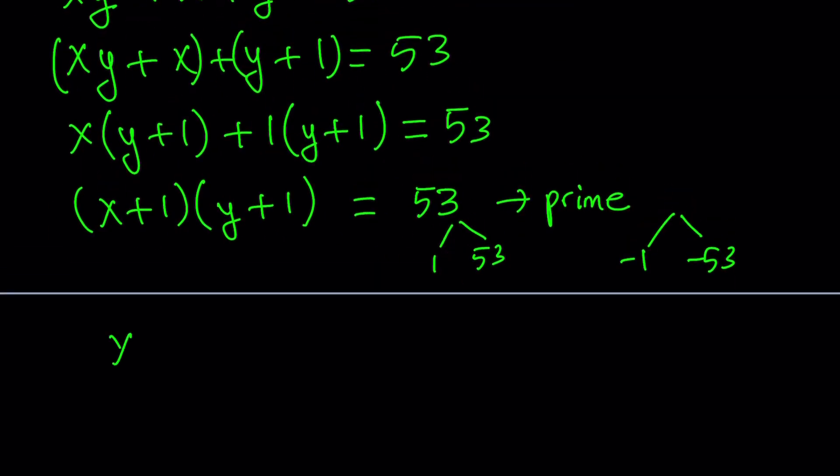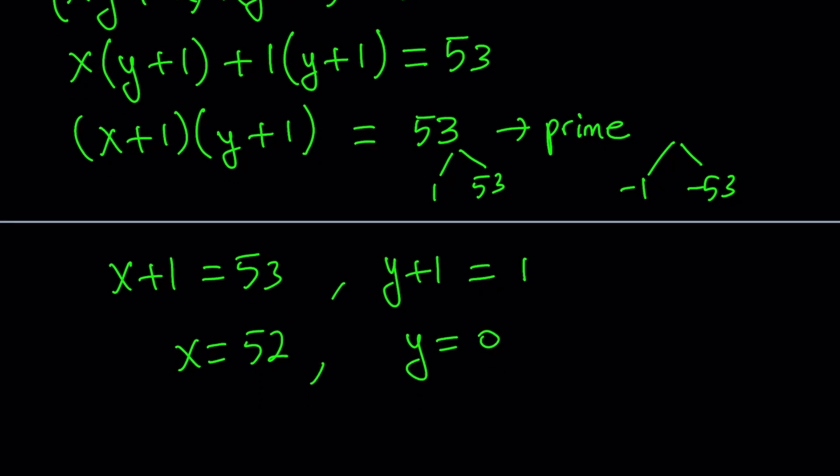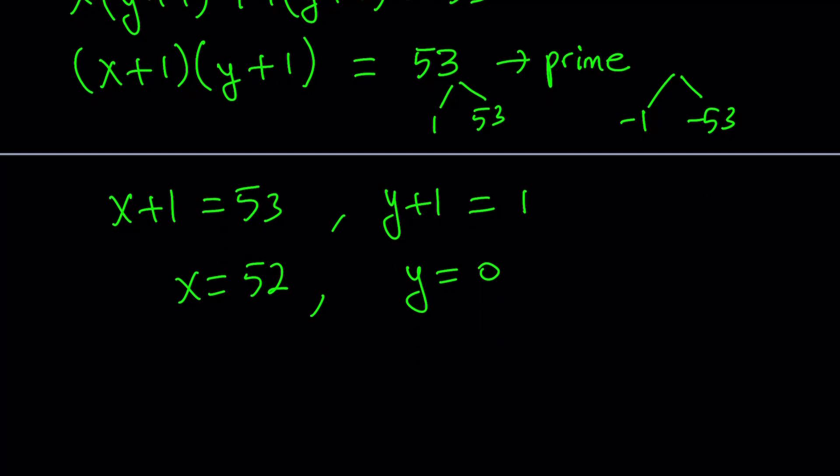x plus 1 can be 53 and y plus 1 can be 1 because 53 times 1 is 53. So from here, we get x equals 52 and y equals 0. So that's going to give us one of the solutions. At the end, we're going to write all the solutions as ordered pairs. So let's proceed with another case. I can switch them around and write x plus 1 can be 1 and y plus 1 can be 53. From here, I get x equals 0, y equals 52.